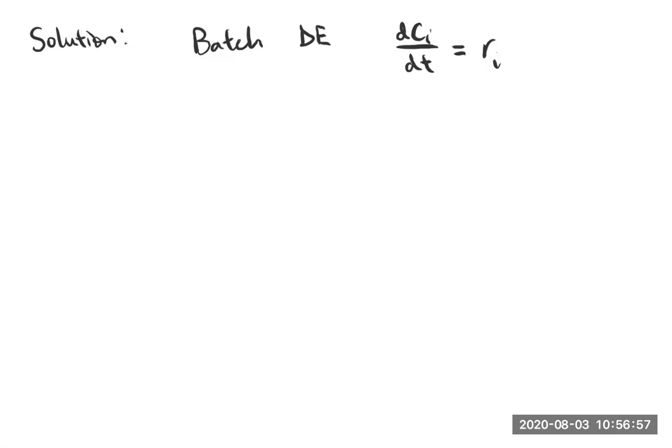We're going to have DCI DT equals RI. And that's what we can use at constant volume. We know that RA is minus KCA. Again, just so I have it on this page, A goes to B.